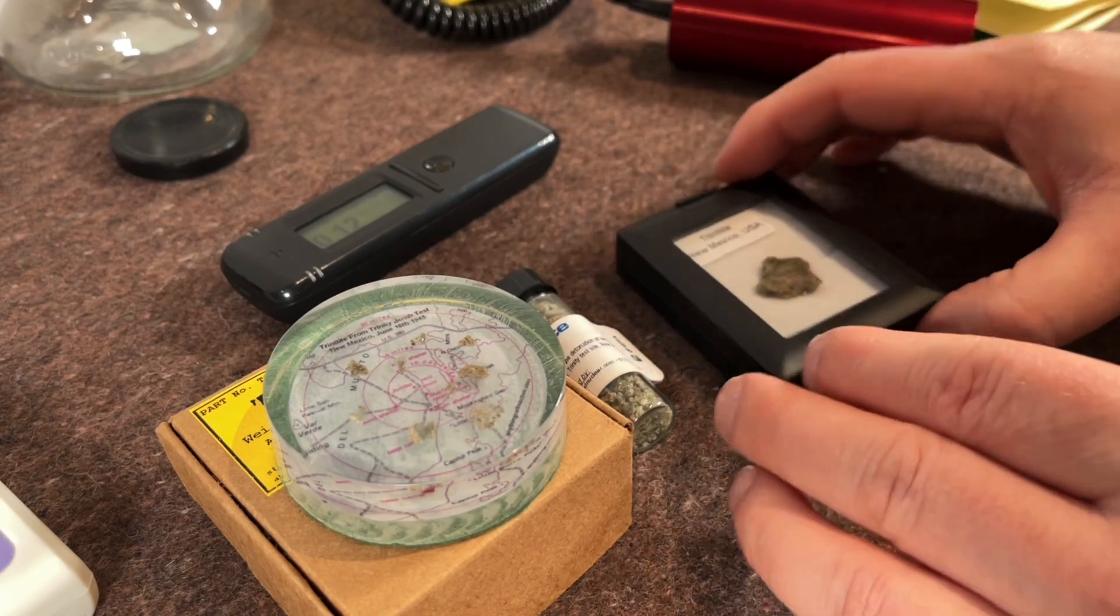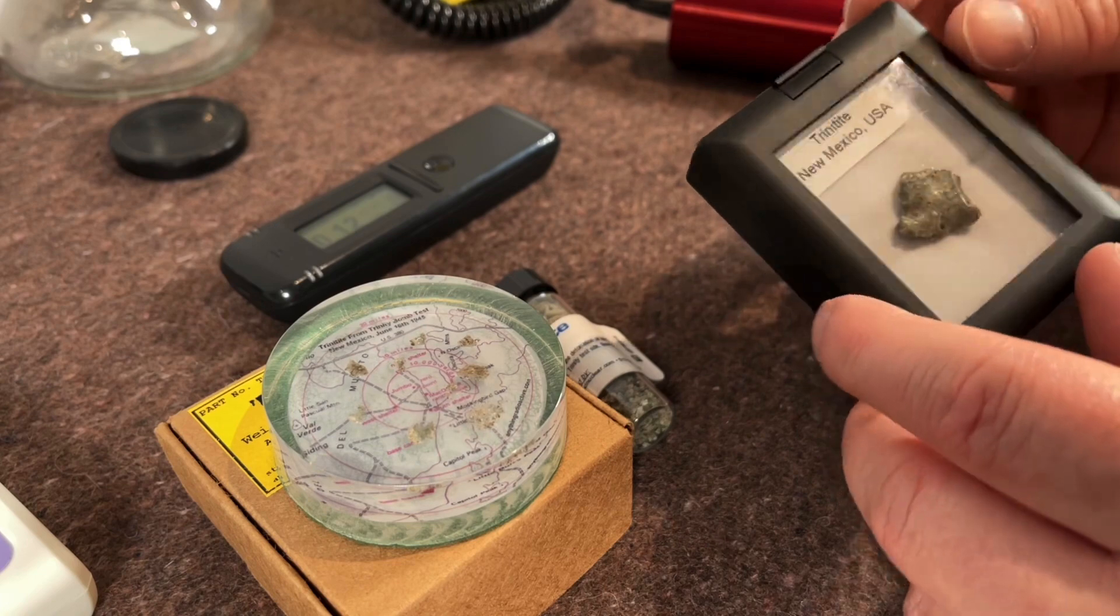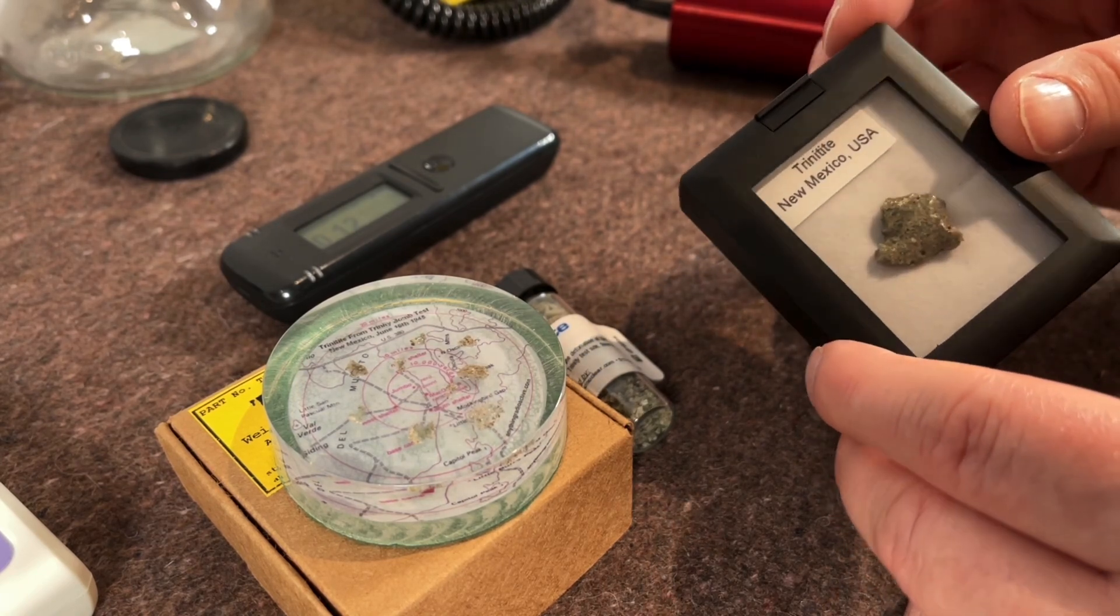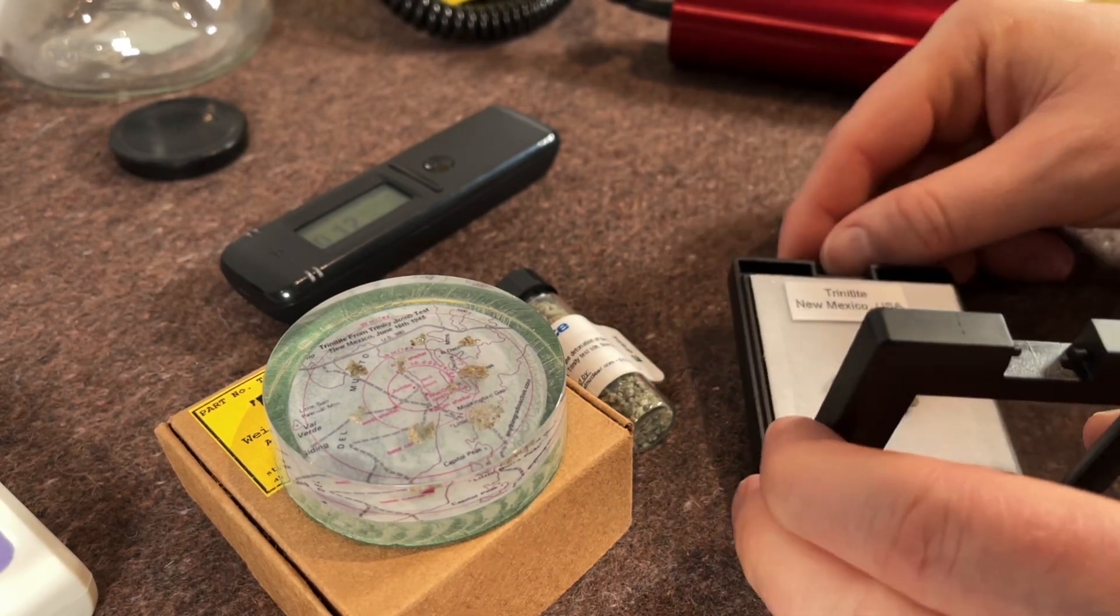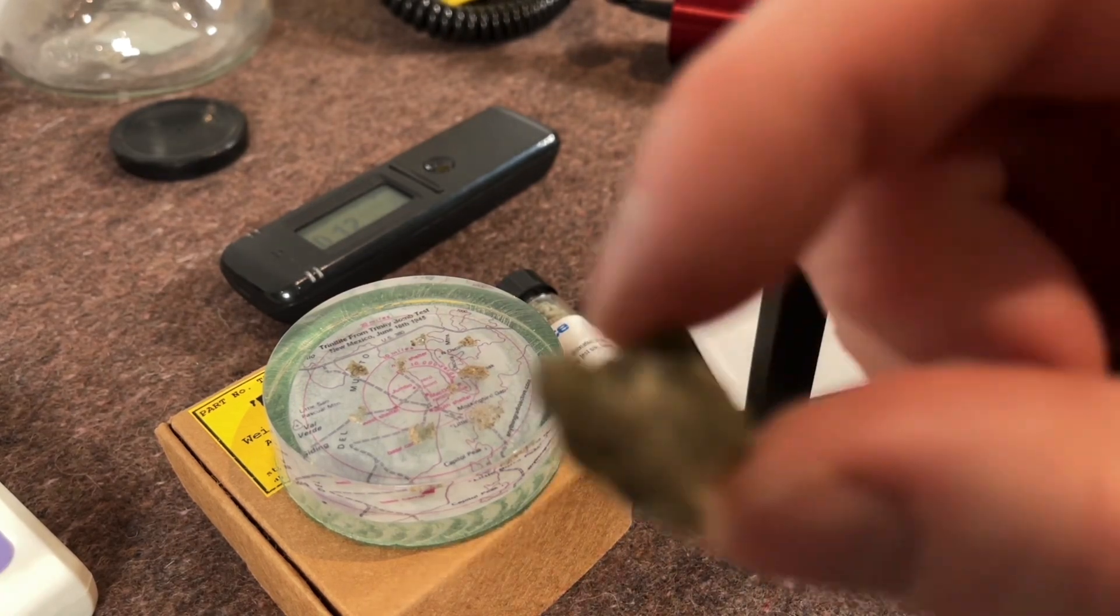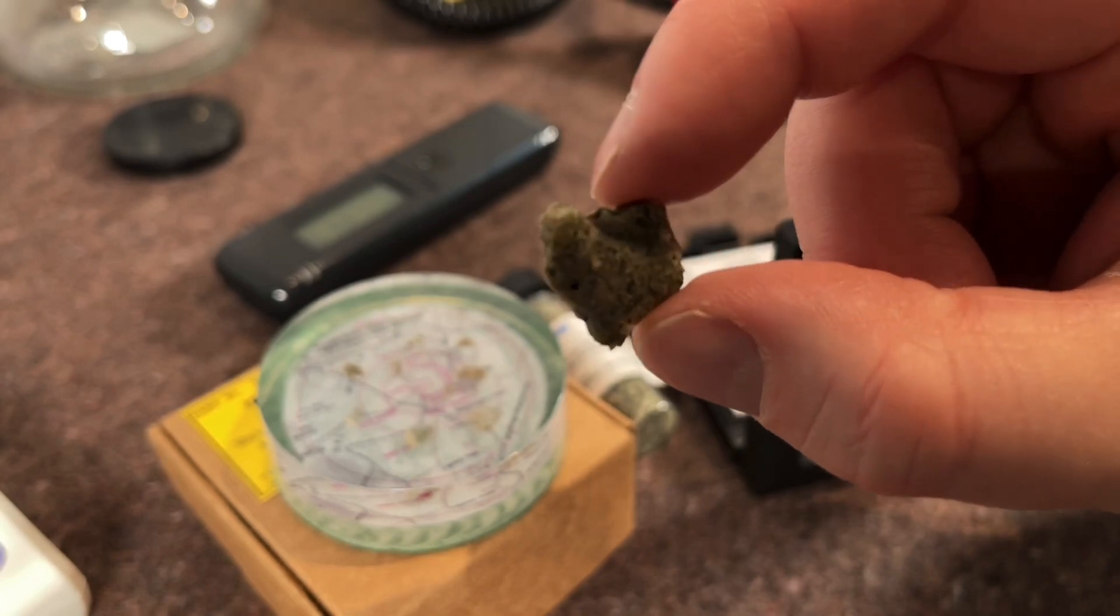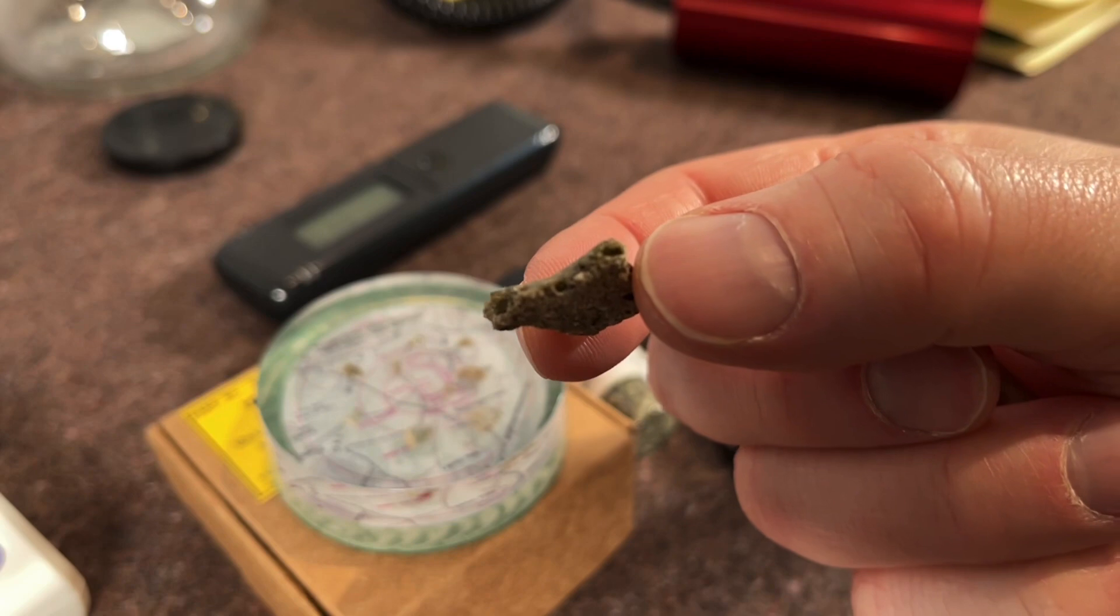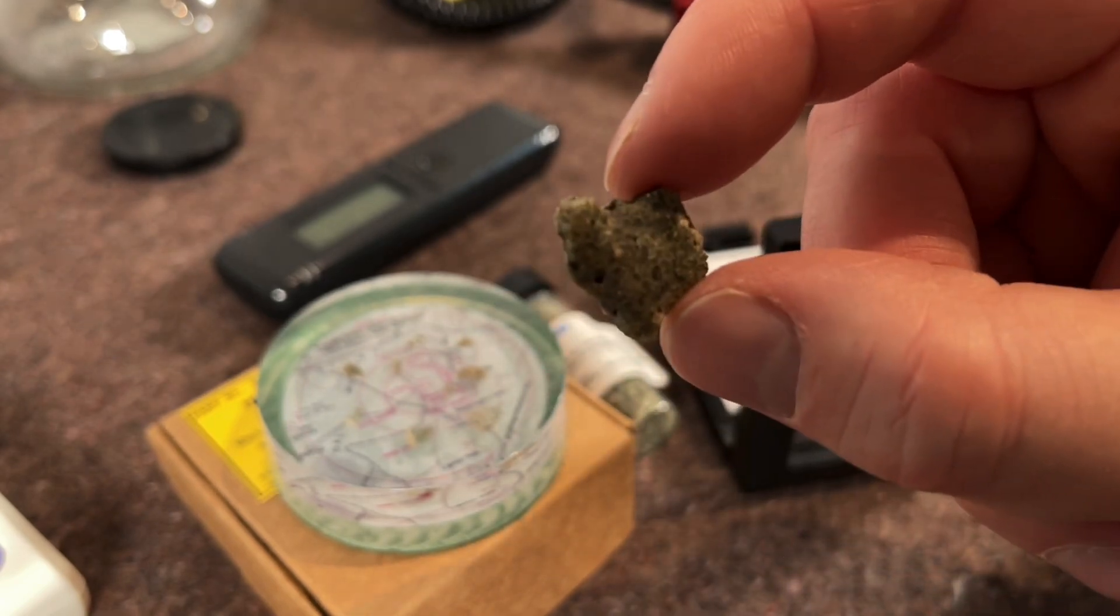But it's pretty cool. I collect a lot of Uraninite pitchblende and I've never really looked at any other radioactive rocks. I might start looking at them now because they are quite interesting. It's such interesting stuff. It's not dangerous to hold. You can see the sort of almost translucent surface on it. Yeah very interesting stuff.